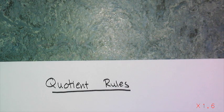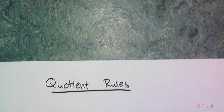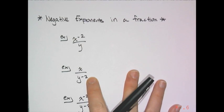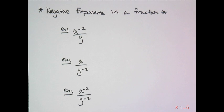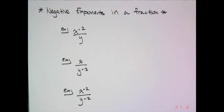We've learned about the product rules of exponents, and now it's time to learn about the shortcuts and rules that pertain to quotients filled with exponential expressions. The first one we're going to look at is not really a rule — it's more like a shortcut you can use if you notice it. It has to do with negative exponents in a fraction.